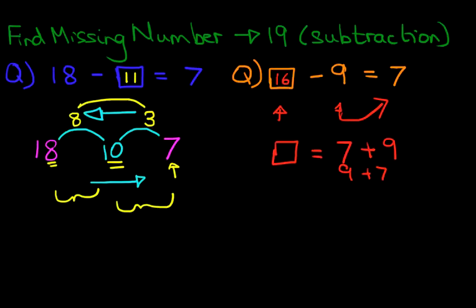16 minus 9 equals 7. Now did you see what we did? We took this number here, the 9, and we moved it over here. And we added a plus. So the box here became 7 plus 9. That's a little trick which you should be aware of when you're trying to find the first number where you have to subtract.